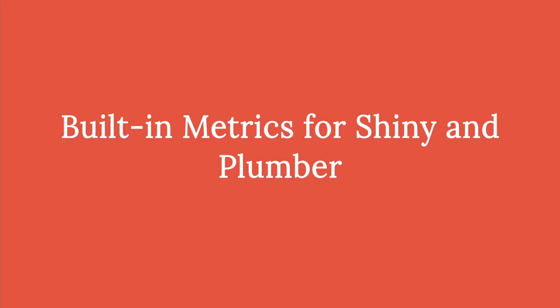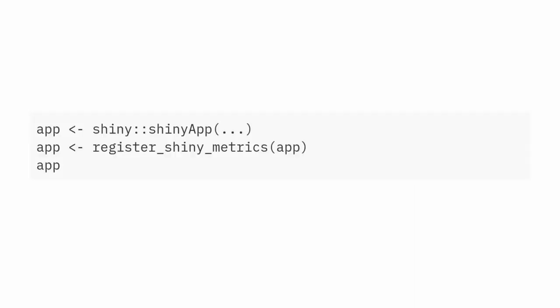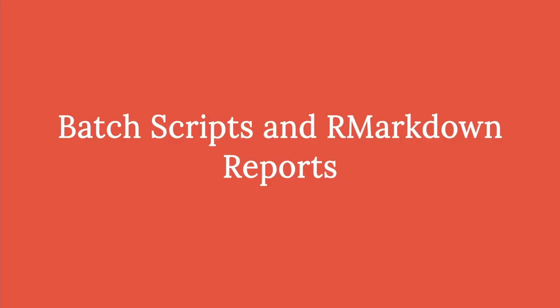If coming up with your own custom metrics seems intimidating, there is some good news: a central goal of the OpenMetrics package has always been ease of use with existing R application frameworks. Right now that means there's built-in support for Shiny and Plumber. If you're using Shiny already, you can add useful metrics just by calling register_shiny_metrics, which gives you a bunch of defaults. The same is true for Plumber — you can call register_plumber_metrics with your Plumber router and get a bunch of useful default metrics. I'm also interested in further community contributions for other popular R frameworks, and there's room for improvement on the existing built-in metrics.